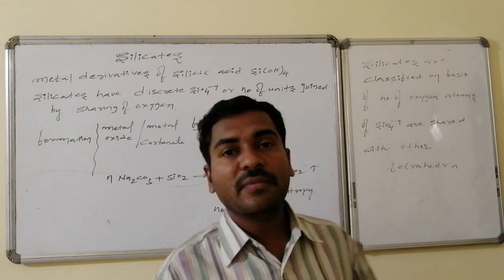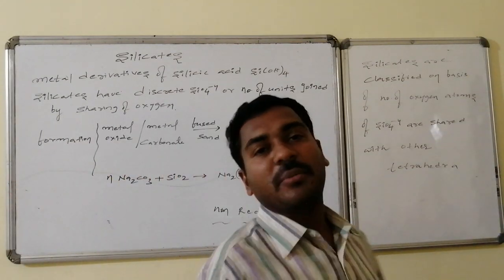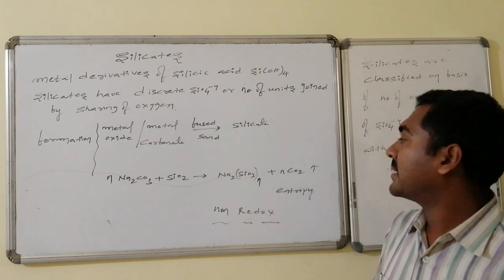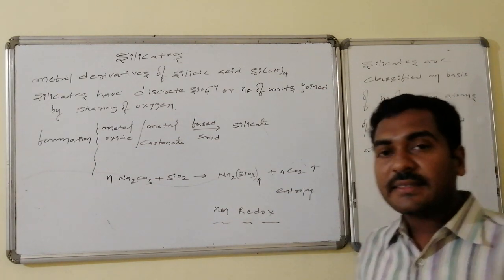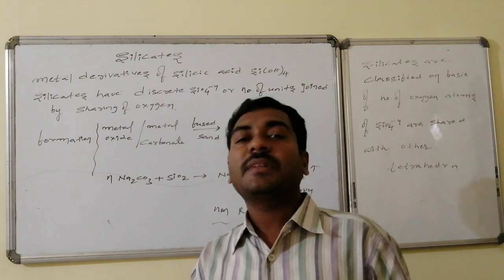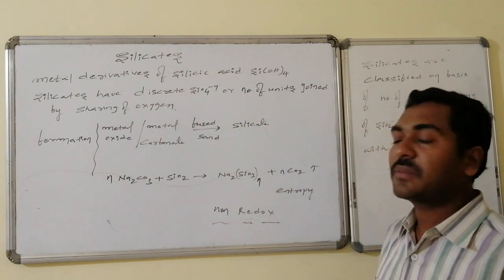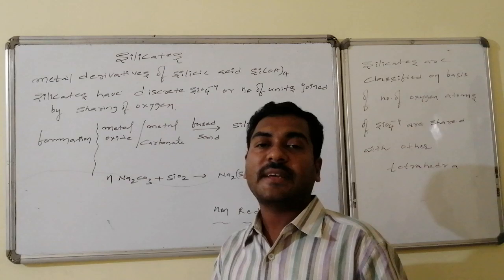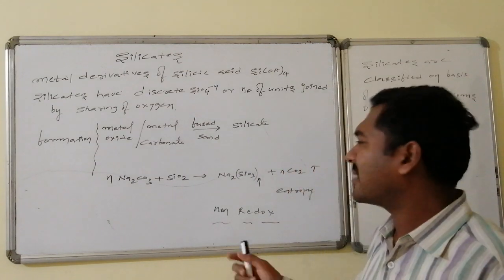Silicate formation occurs when a metal carbonate undergoes fusion with silica. For example, sodium carbonate on reaction with silica under fusion conditions forms Na2SiO3 (n times, it is a polymer), releasing n times of CO2 gas. Entropy increases in this process, making delta G negative. It is a non-redox reaction.